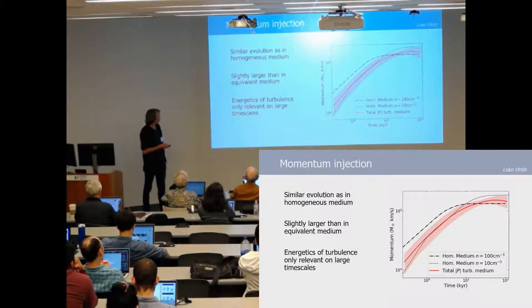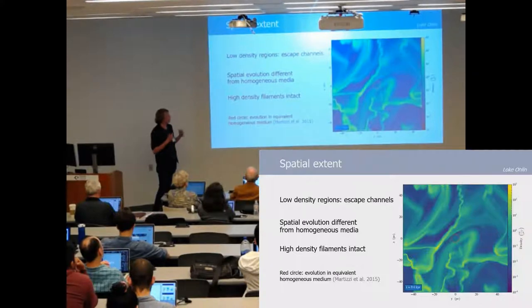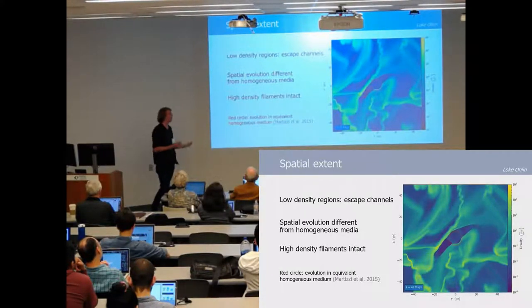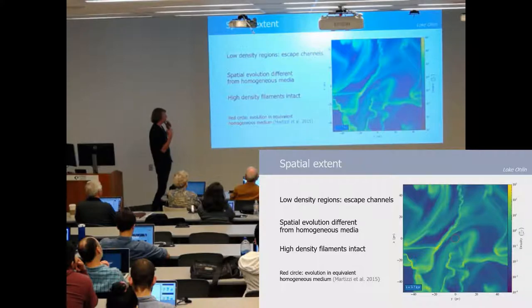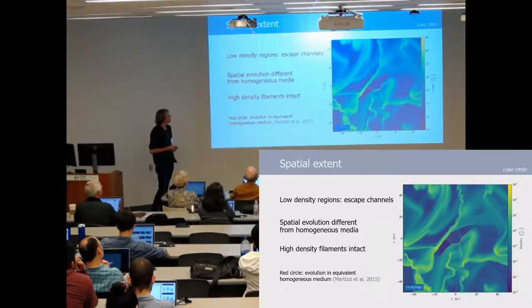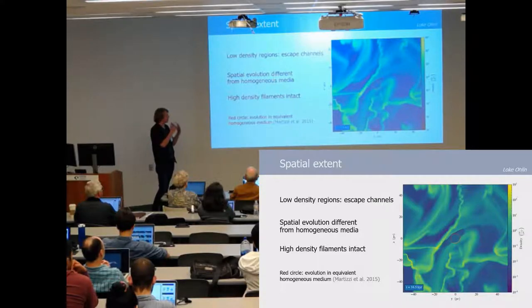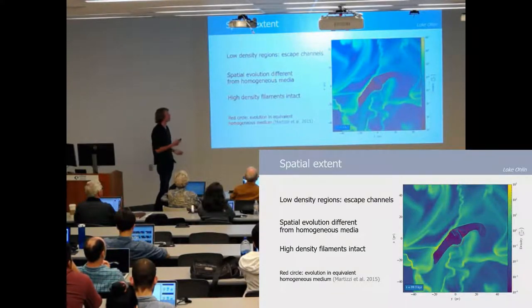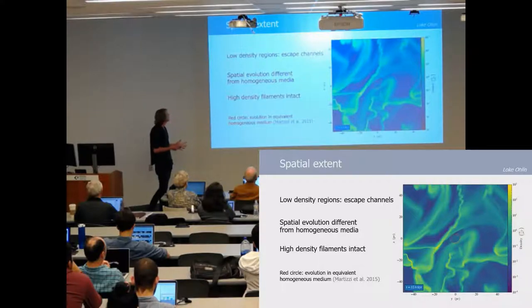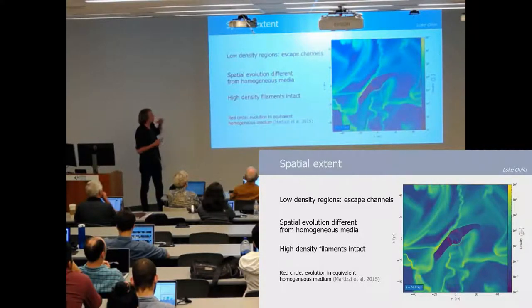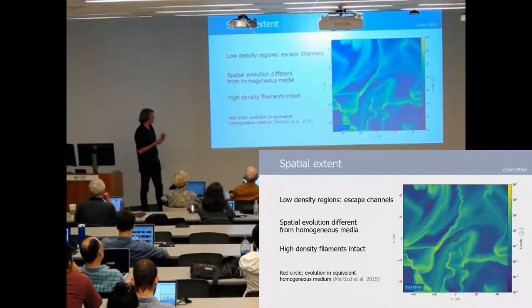However, we also noticed something else which was noted in other papers but not really highlighted, and that is that supernovae tended to expand into the low density gas which then act as escape channels. This means that you can have a highly asymmetric evolution which is not fully captured by spherically symmetric models such as the red circle here, and this also means that you leave the high density filaments intact.